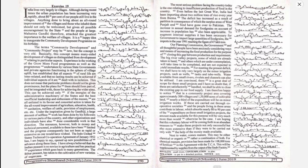For chemical manure, provision has been made for 1,800,000 tons of fertilizer in the agreement with the TCA. This will be supplemented by supplies from the output of the Sindri factory.